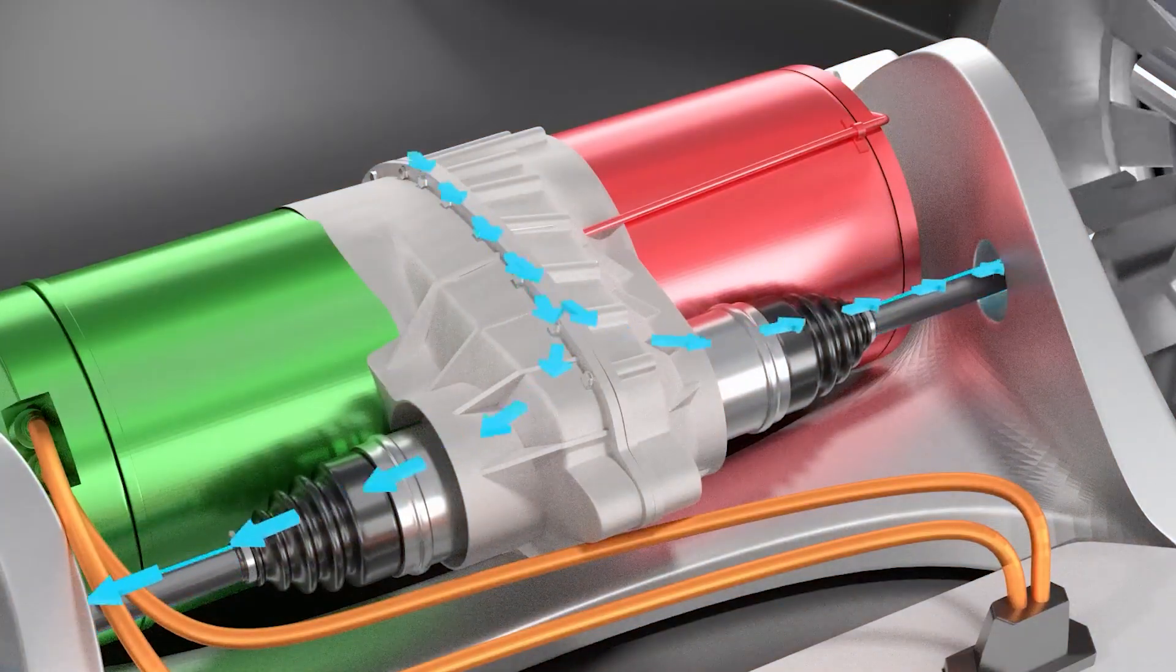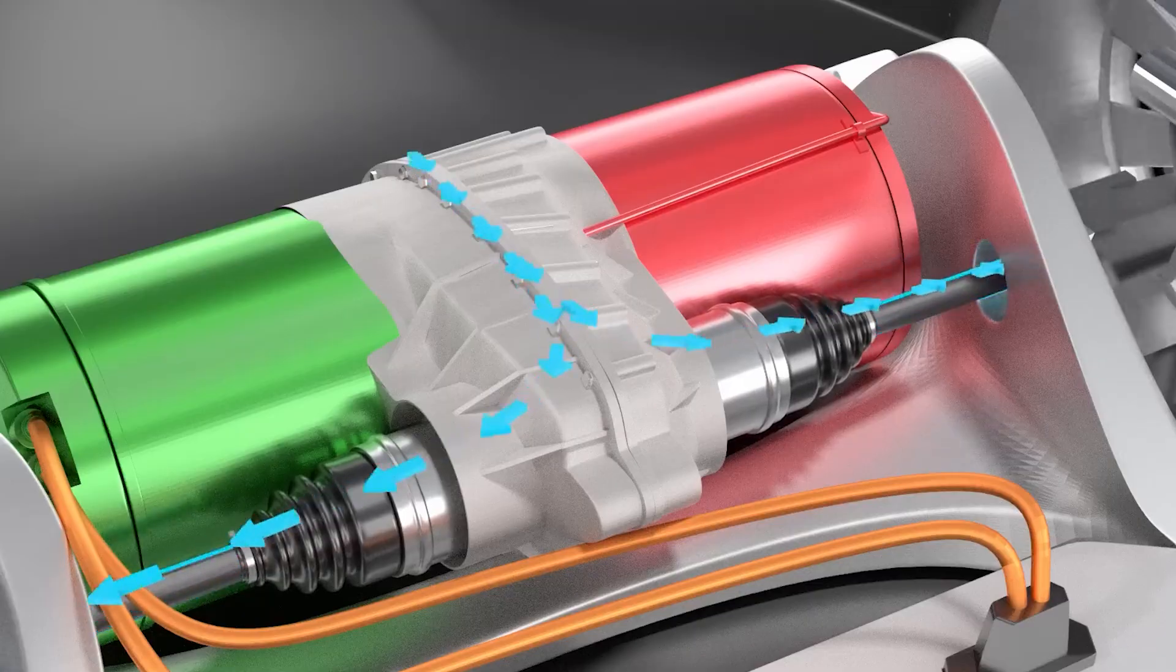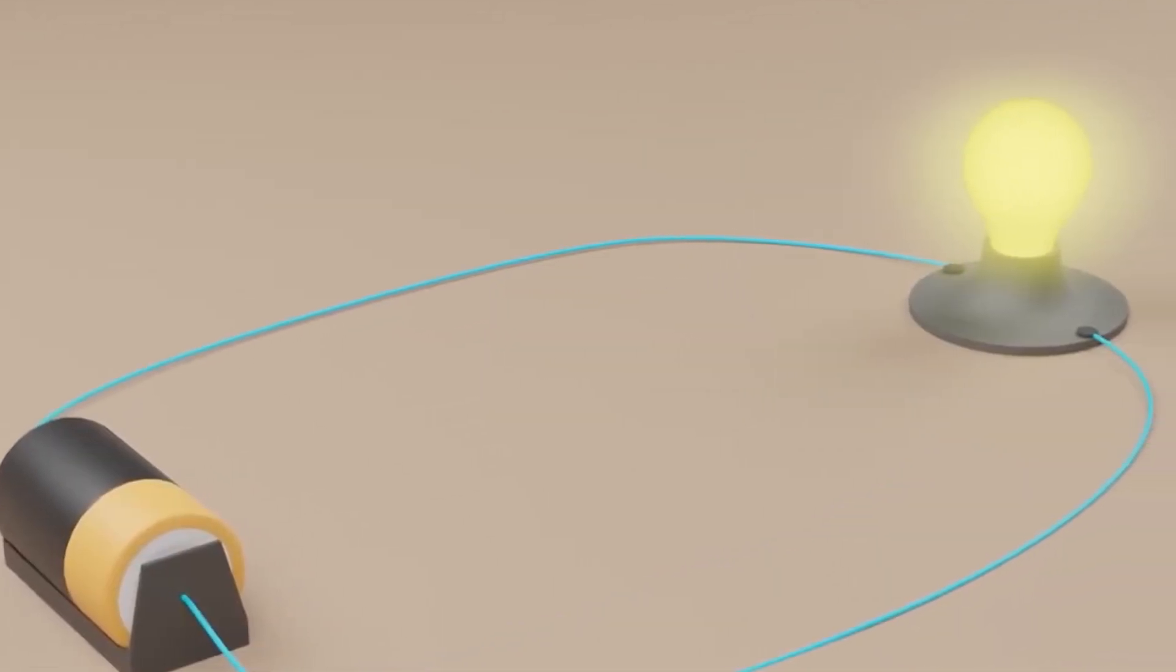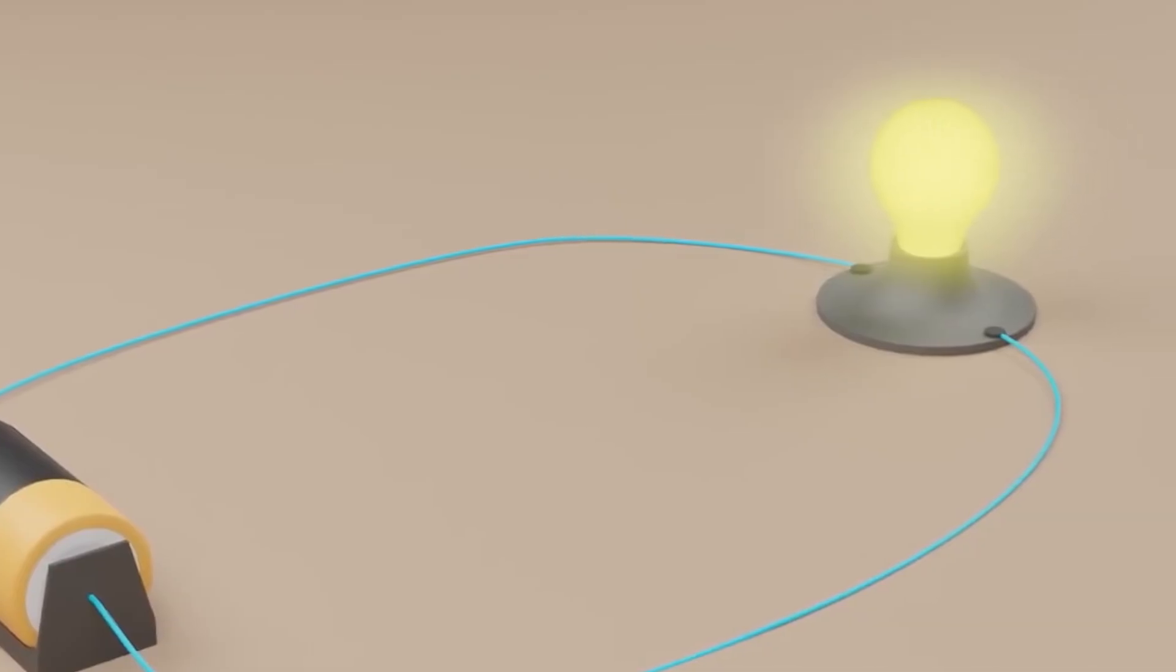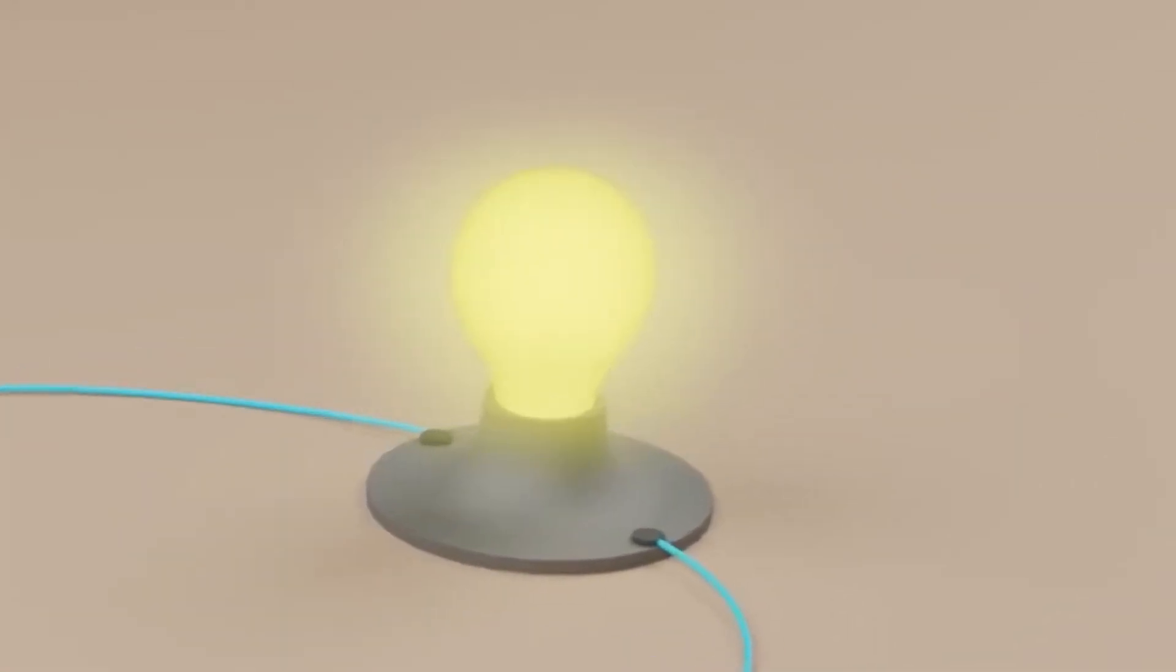At the heart of every electric motor is the flow of electricity. Let's start simple. Imagine a battery, a wire, and a light bulb. When you connect them in a loop, electricity flows from the battery through the wire, lighting up the bulb.